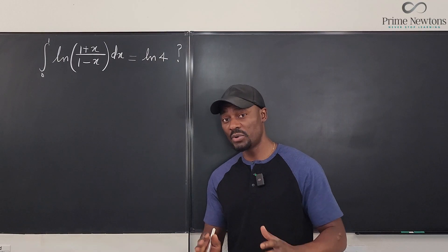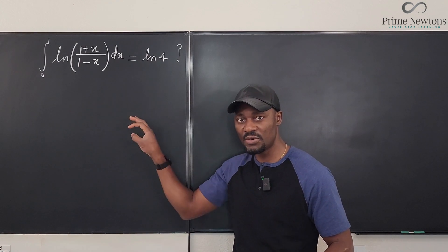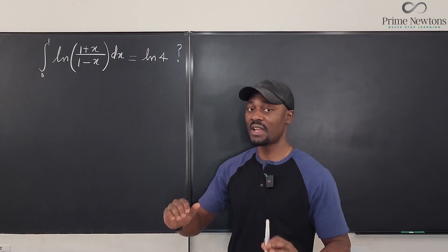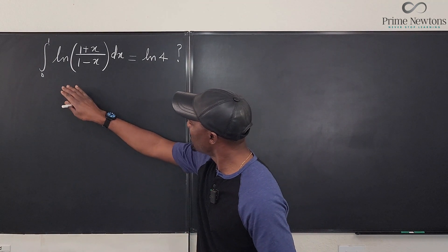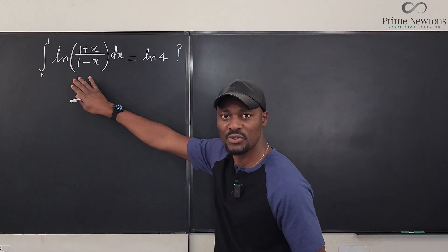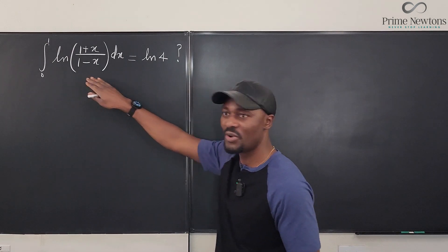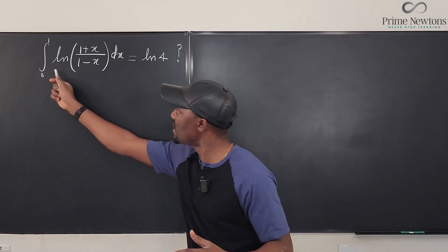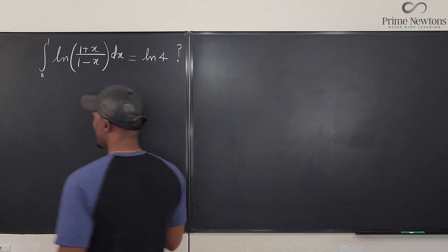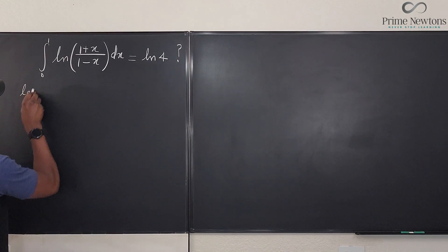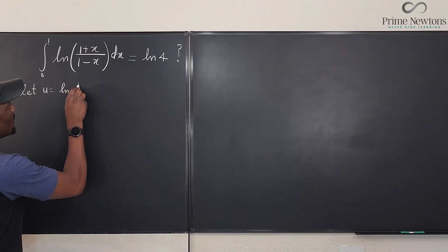Because this is an improper integral, I am going to ignore the boundaries for now and just take the indefinite integral, then at the end I will evaluate. This is purely a function involving natural log, so I have to do integration by parts — I'll differentiate the log expression and integrate dx. I'll let u be ln of (1+x)/(1-x).